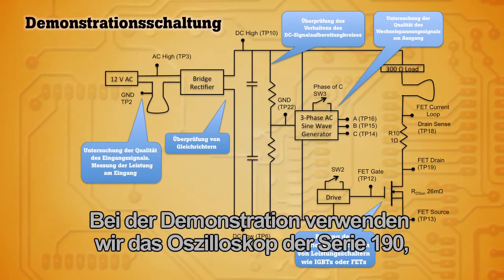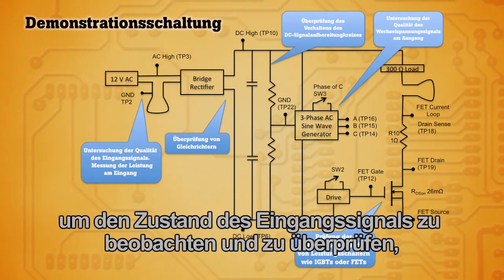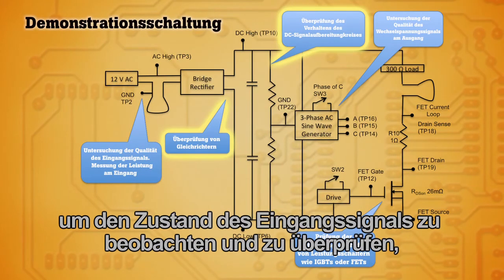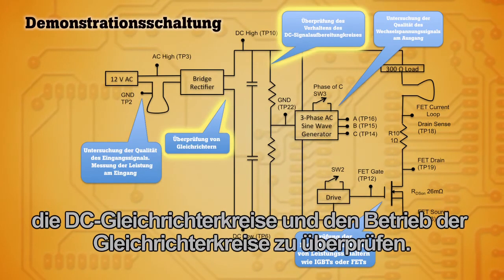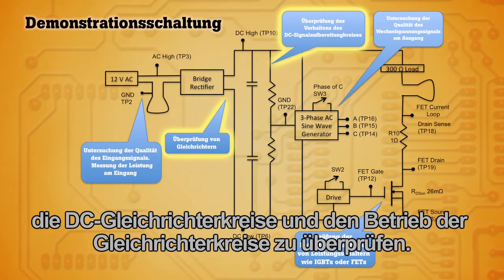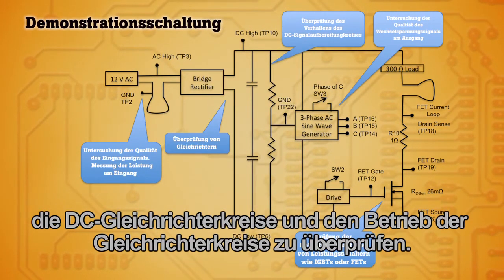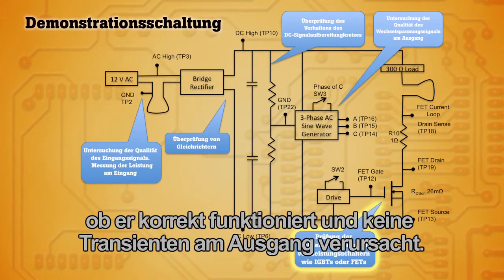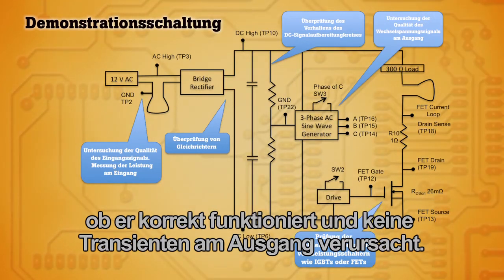Through the demonstration, we'll use the 190 series oscilloscope to look at and validate the integrity of the input power, check the DC rectifier circuits and the operation of the rectifier circuits. We'll look at a typical high-speed electronic switch to see that it's performing correctly and not causing any transients on the output.